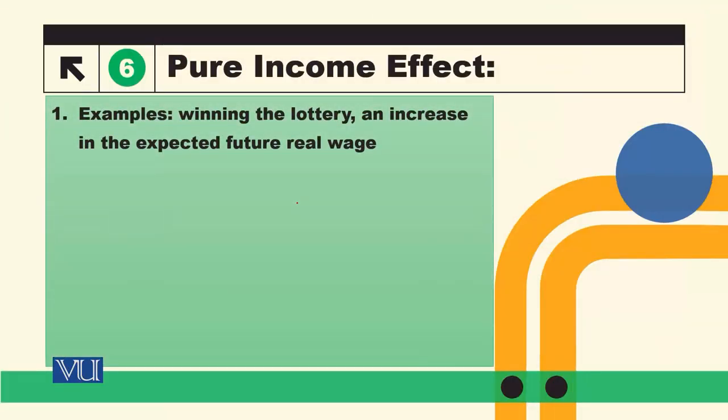This is the pure income effect. Suppose we take the example that a person wins a lottery. It is definitely income — it is wealth. Lifetime wealth is more than it was before. Because of the income effect, the person will work less. The substitution effect is zero, because winning a lottery does not change the trade-off between leisure and work. This is why we say that winning a lottery is a case of pure income effect, and the substitution effect is zero.